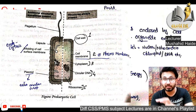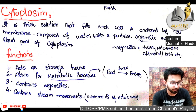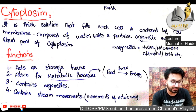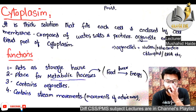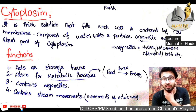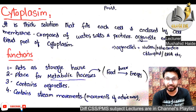Next, cytoplasm. The cytoplasm is a thick solution that fills each cell and is enclosed by the cell membrane. It is composed of water, salt, and protein, and organelles exist within this liquid pool. Its functions include acting as a storage house and as the place for metabolic processes — for example, converting food into energy.